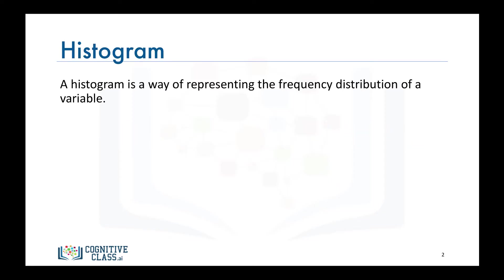Let's start by defining what a histogram is. A histogram is a way of representing the frequency distribution of a numeric dataset. The way it works is it partitions the spread of the numeric data into bins and assigns each data point in the dataset to a bin.